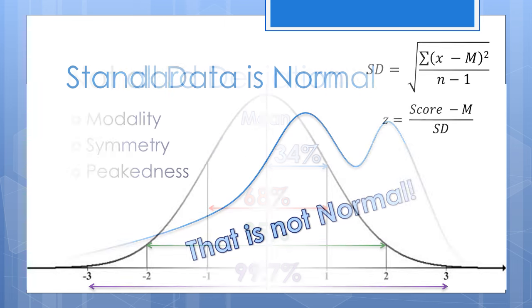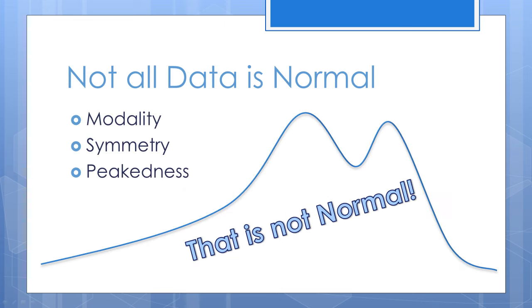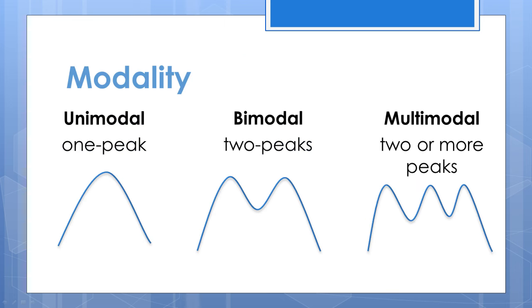Not all samples approximate a normal curve. To understand more about distributions, it is important to understand modality, symmetry, and peakedness. A distribution can have more than one peak. The number of peaks contained in a distribution determines the modality of the distribution. Most distributions are normally distributed and have only one main peak, meaning they are unimodal.